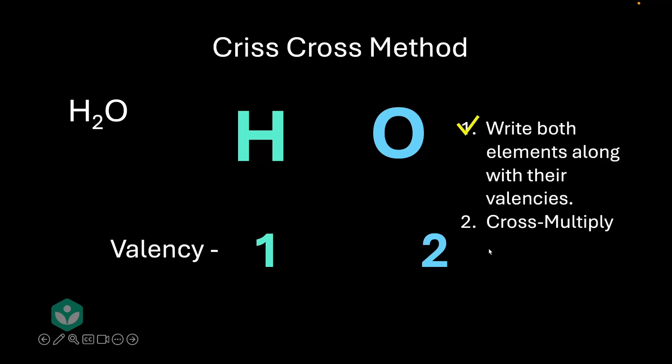Let's move ahead to step two. Step two says cross multiply. What exactly does this mean? Let me explain. Draw two arrows like this that are cross shaped and move the valency of the first element towards the second element following the arrow. Move the valency of the second element towards the first element following the arrow. We're done with the second step.